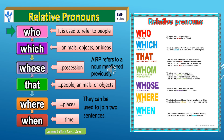Next, we come to 'that'. That can be used for people, animals, or objects. For example: 'This is a man. He lives across the street' becomes 'This is the man that lives across the street.' You could use that for a human being. At the same time, 'I bought the car yesterday' becomes 'Look at the car that I bought yesterday.' So you can use that for both people and things. Next, 'whom' — for example: 'This is a boy. I want to see him' becomes 'This is a boy whom I want to see.' 'This is a boy. I want to speak to him' becomes 'This is a boy with whom I want to speak.'